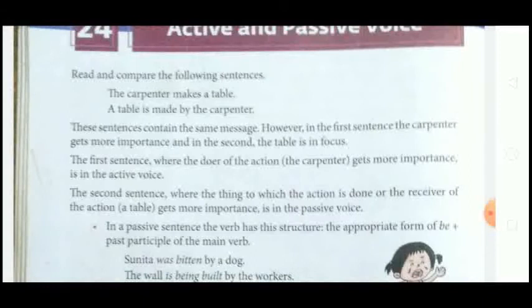The meaning of both sentences is the same. However, in the first sentence the carpenter gets more importance, and in the second sentence the table is foregrounded. In the first sentence we gave importance to the carpenter, while in the second sentence we used the table as the important element.